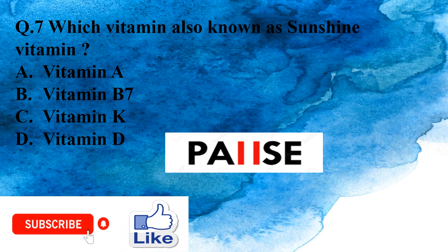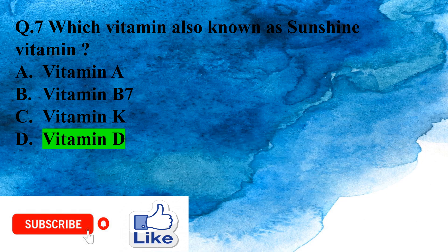Question 7: Which vitamin is also known as the sunshine vitamin? Option A: Vitamin A, Option B: Vitamin B7, Option C: Vitamin K, Option D: Vitamin D. The right answer is Option D, Vitamin D.